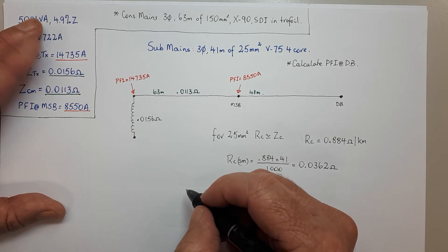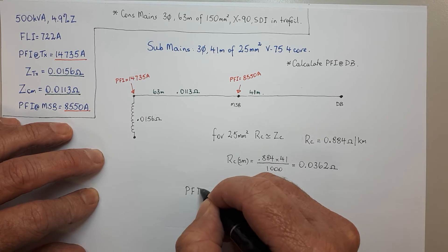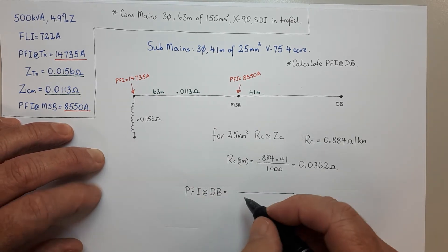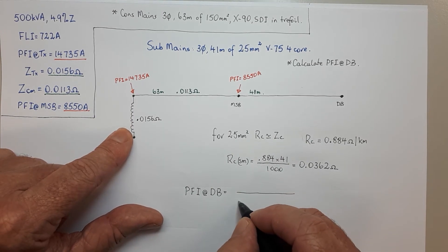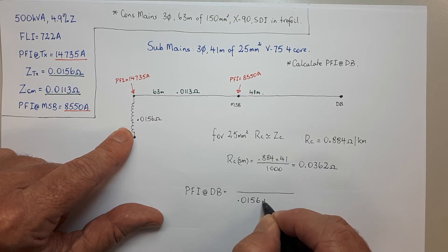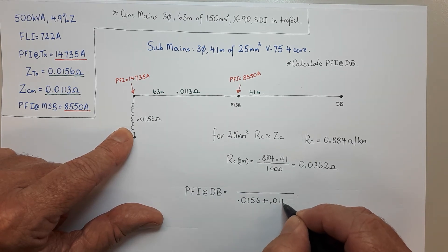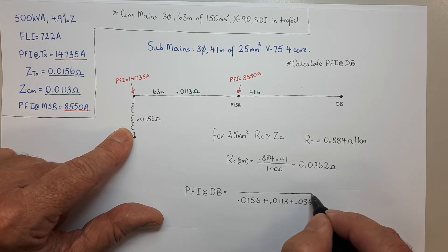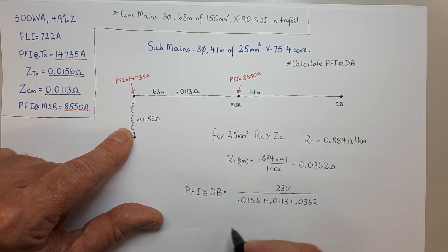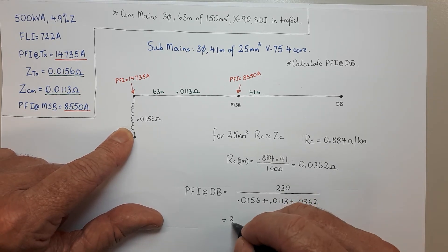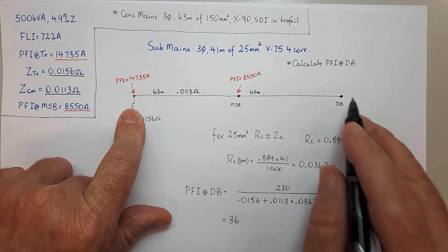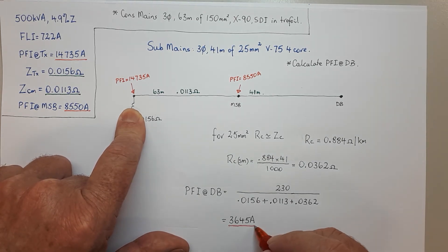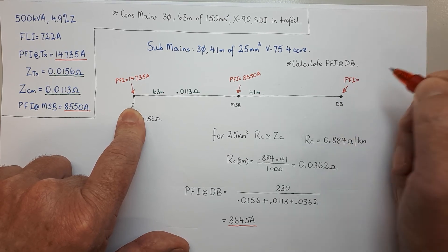So that means the prospective fault current at the distribution board is this long fraction. We've got to include the transformer — because that's going to be in the loop if there's a fault current. So we have 0.0156, plus 0.0113, plus 0.0362, giving us 2.30 over all of that. Probably shouldn't be too surprised it's dropped down a fair bit — from 14,700 odd at the transformer, by the time you get here it's 3,645 amps. So the PFC at the DB is 3,645 amps.